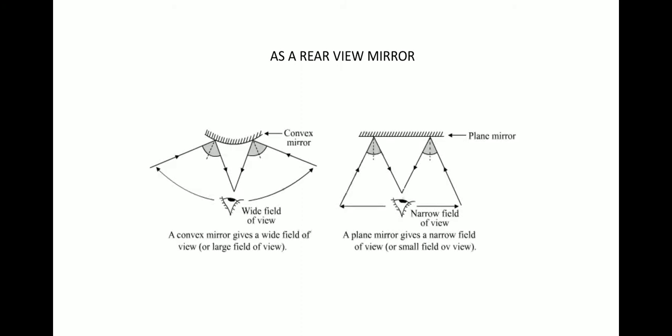Also the convex mirror is also used as a rear view mirror in vehicles. A convex mirror diverges the incident light and always forms a virtual and small erect images behind the mirror. So this enables us to see the vehicles which are approaching from behind.